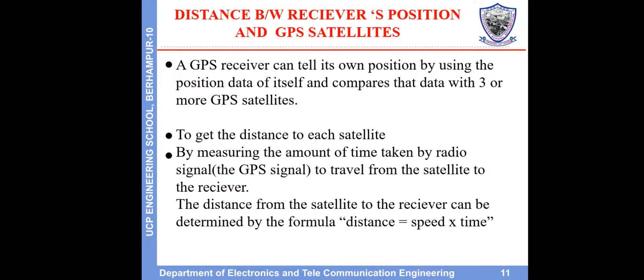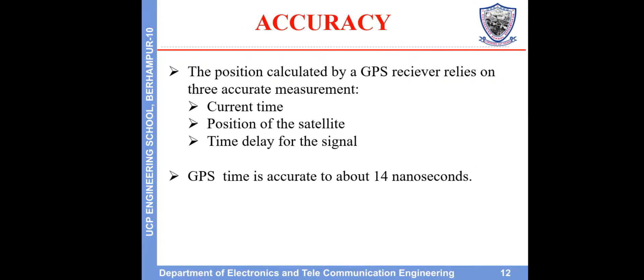To determine the distance between the receiver and GPS satellites, a GPS receiver tells its own position by using position data and comparing it with three or more GPS satellites. It measures the amount of time taken by the GPS signal to travel from the satellite to the receiver. The distance from the satellite to the receiver can be determined using the formula: distance equals speed multiplied by time.